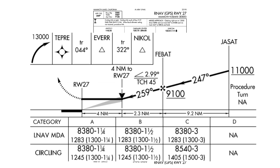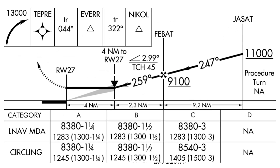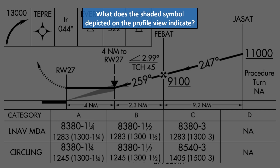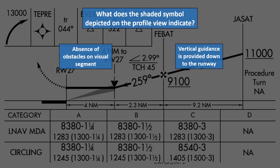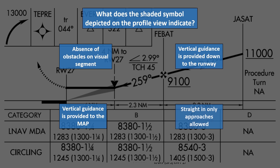For question two, let's have a look at the profile view of the approach plate. There's a shaded triangular figure here called a stipple. What does this indicate? Absence of obstacles on the visual segment, vertical guidance is provided down to the runway, vertical guidance is provided down to the missed approach point, or straight-in only approaches are allowed?